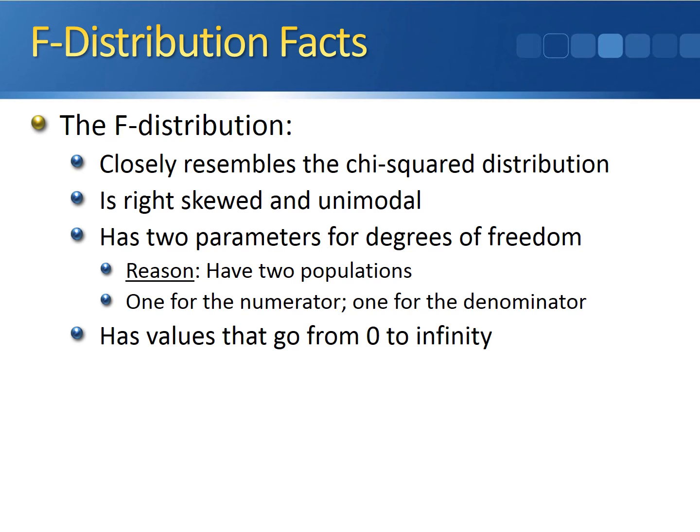The values of the F-distribution go from zero to infinity, just like the chi-squared distribution, and the F-distribution changes shape based on the degrees of freedom.